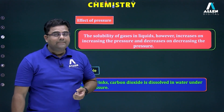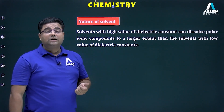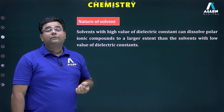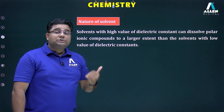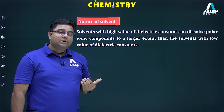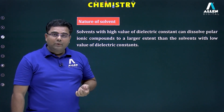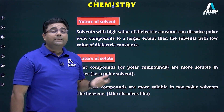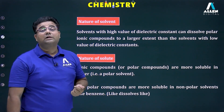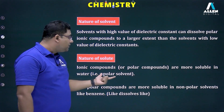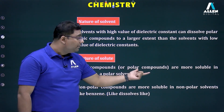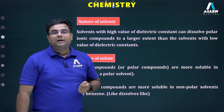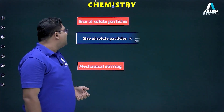Nature of the solvent: solvents with a high dielectric constant can dissolve more polar solutes, while solvents with a low dielectric constant dissolve less polar solute. Nature of the solute: ionic compounds and polar compounds are more soluble in polar solvents like water, whereas nonpolar compounds are more soluble in nonpolar solvents like benzene.